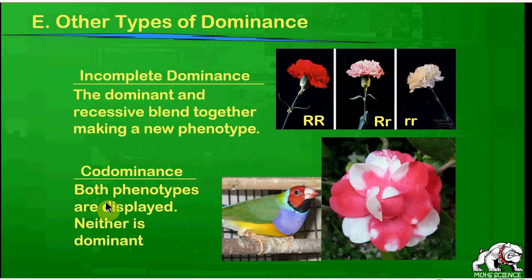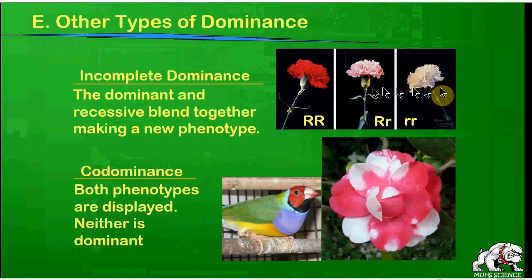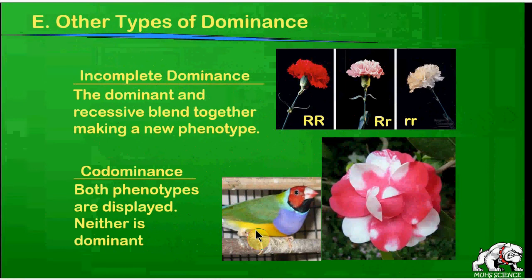Another type of dominance is called co-dominance, where both phenotypes are displayed and neither one is dominant. You see this in pictures of a bird and a flower here. In the bird, you've got all kinds of different colors being shown in the feathers — yellow, green, blue, cyan, red, and black alleles are all displayed. Incomplete dominance is where one gene cannot completely override the other; co-dominance is where both genes' alleles are fully displayed.